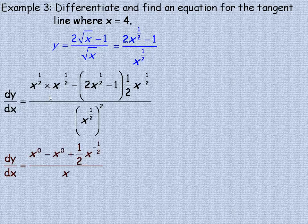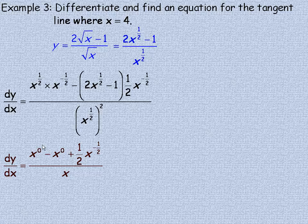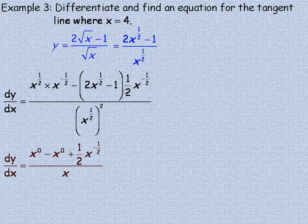Now when we go to simplify this, when you're multiplying two powers with the same base, you add the exponent. So a half and negative a half adds to zero. That's where that x to the zero comes from. The rest of this comes from expanding this into the brackets here, distributive law.